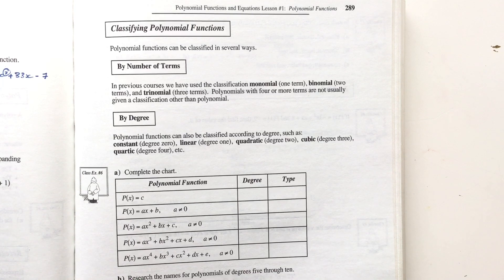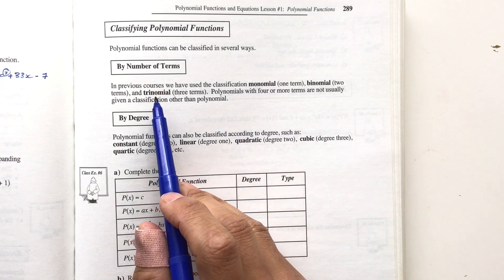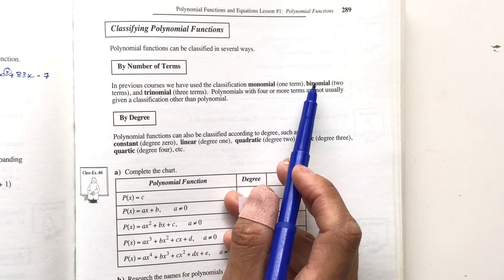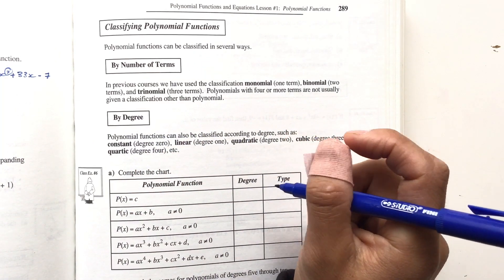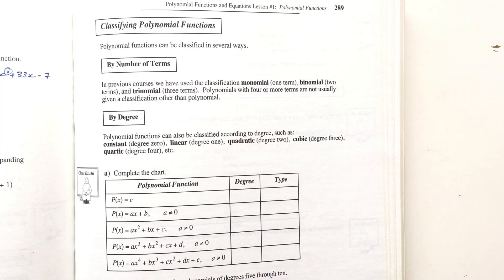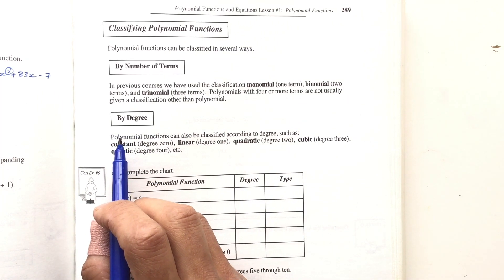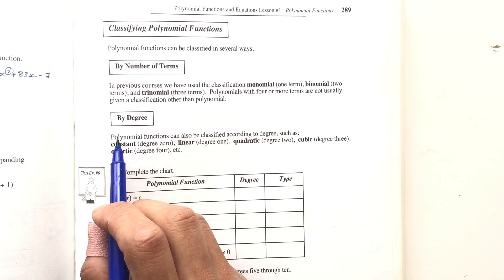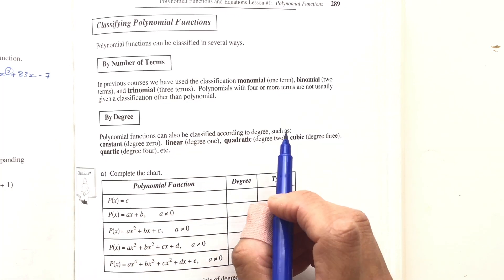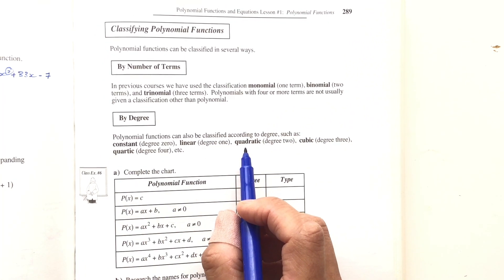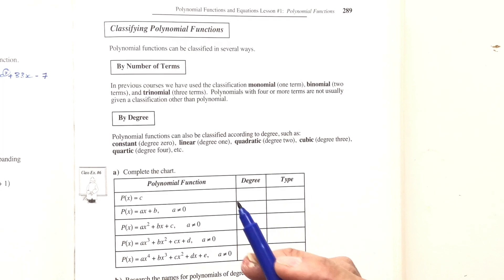Next, we're going to classify polynomial functions. We can classify by terms: a monomial has one term, a binomial has two terms, and a trinomial has three terms. Polynomials with four or more terms we just call a polynomial. We can also classify by degree: degree 0 is constant, degree 1 is linear, degree 2 is quadratic, degree 3 is cubic, degree 4 is quartic, and so on.